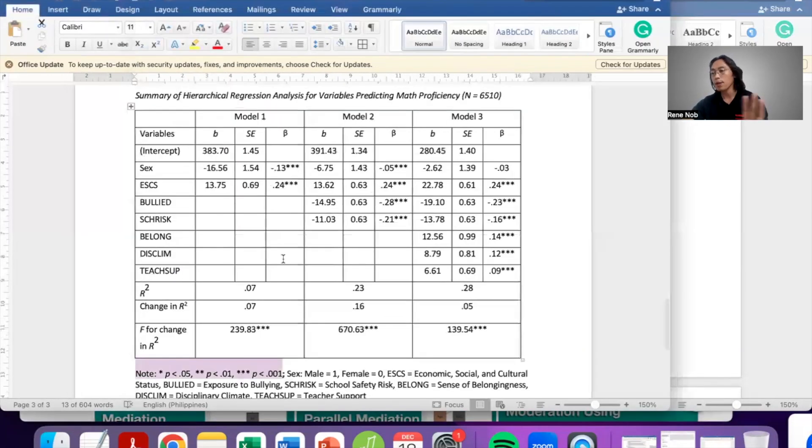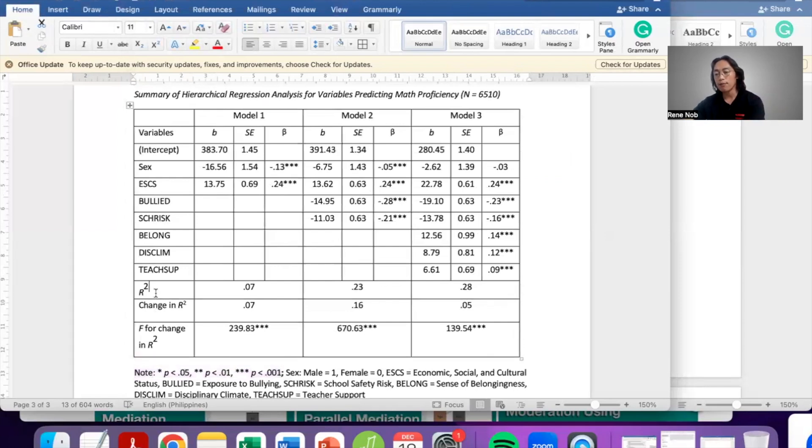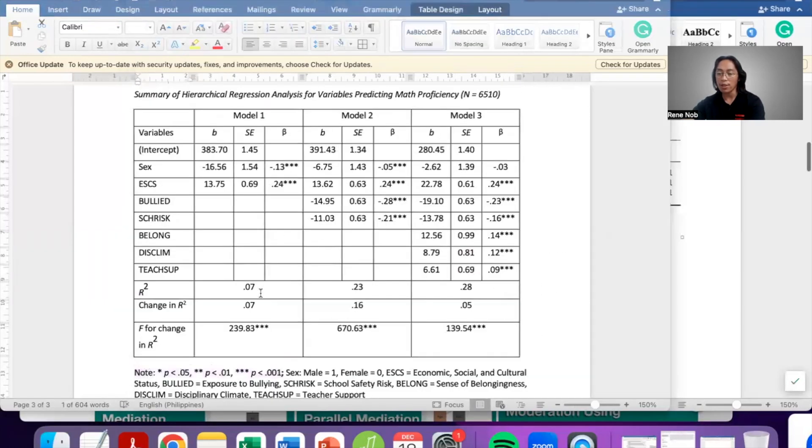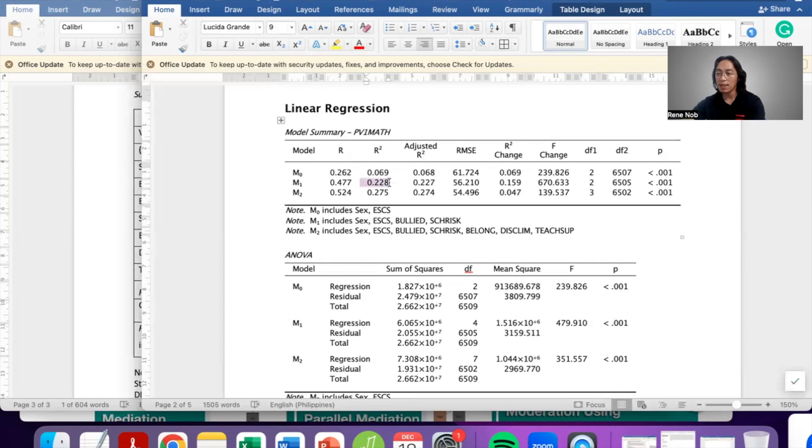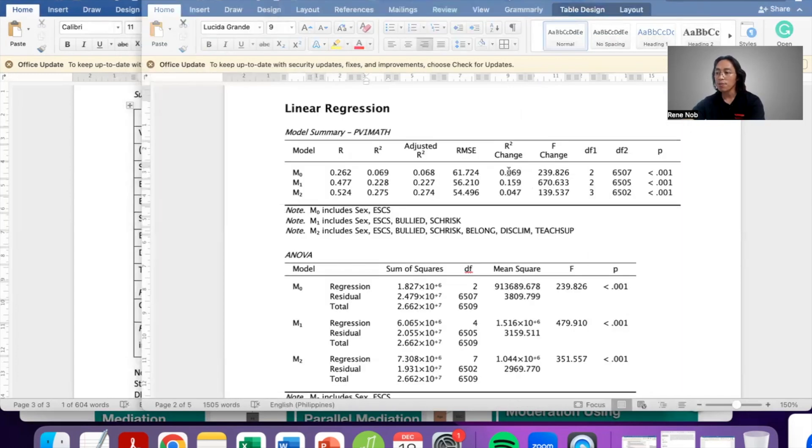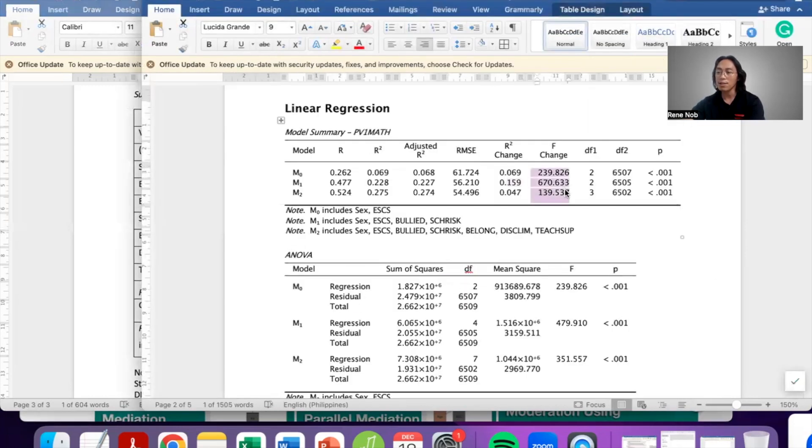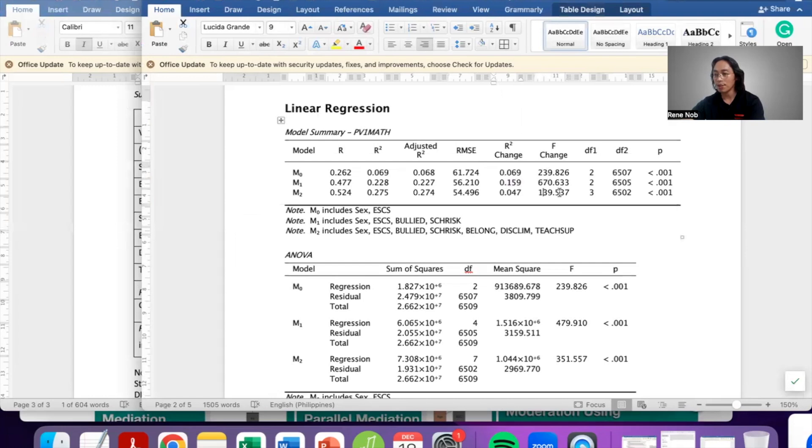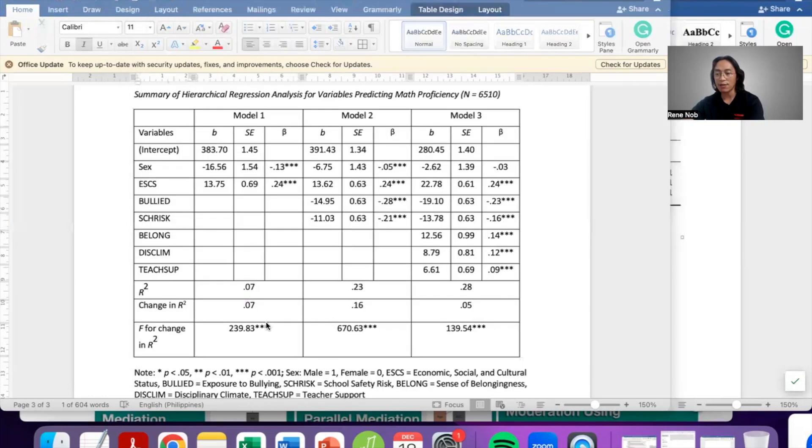For the model summaries, I simply reported the variance, R squared. Where do we get that? Here. So you will notice, this is 0.07, which is rounded up, and then 0.23, and 0.28. And then the change in R, where did we get that? From here, change in R. Obviously, this is the first model, so the R squared and the change in R are the same. And then if these are significant, so the corresponding F ratio for the change in R, these values are from here. Whether they're significant or not is identified again by the asterisk.